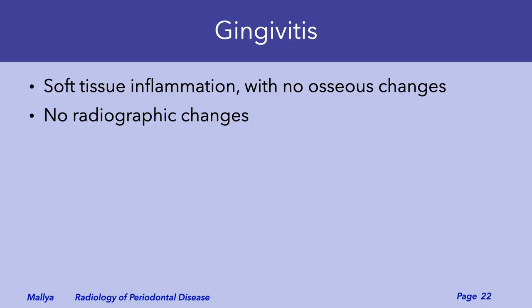Now let us consider how these appearances change with the development of periodontal disease. In gingivitis, you have inflammation of the gingiva with no bony changes. Thus, there will be no radiographic changes that are apparent. It is important to recognize that patients who have dramatic and marked changes of gingival inflammation could have radiographic examinations that demonstrate no changes in the periodontal bone levels.